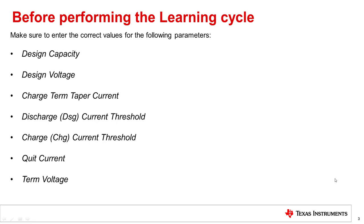Discharge current threshold is a current threshold above which the gauge detects that it is in discharge mode; a value below C/10 is generally reasonable. Charge current threshold is a current above which the gauge detects that it is in charge mode — make sure to set this value lower than the charge termination taper current. Quit current is the current below which the gauge enters relaxed mode; it is recommended to be less than C/20, and must be less than both the discharge current threshold and the charge current threshold.